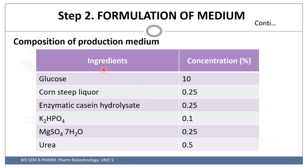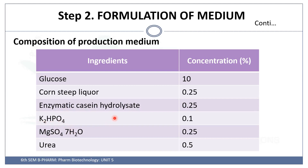The composition of production media includes glucose, corn steep liquor, enzymatic casein hydrolysate, potassium hydrogen phosphate, magnesium sulfate, and urea.